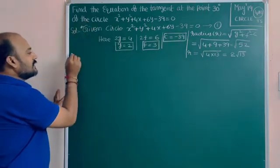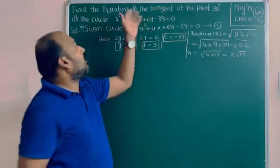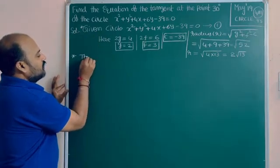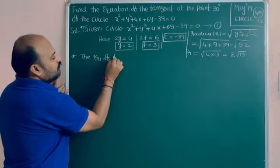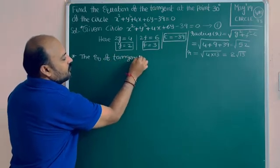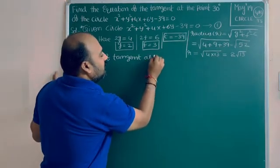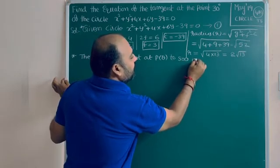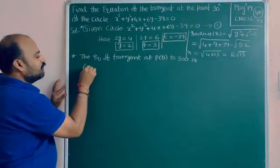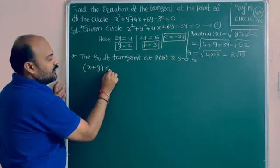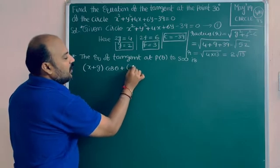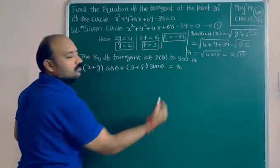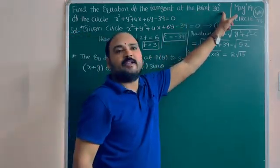The second step: write the equation of the tangent at the point theta to the circle S = 0. The formula is (x + g)cosθ + (y + f)sinθ = r. According to the question, the point theta is 30 degrees.